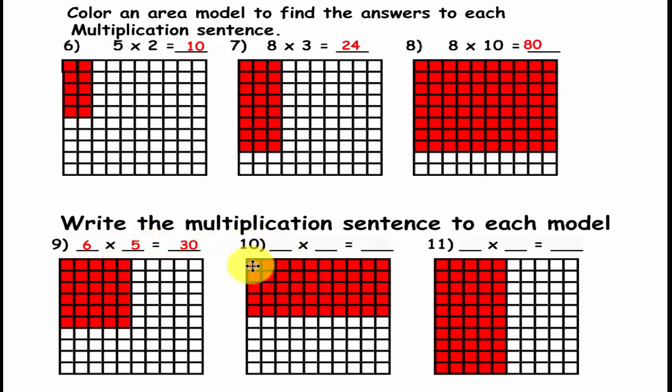Now for number 10, how many rows, 1, 2, 3, 4, 5, and we have 10 columns. So 5 times 10 is equal to 50.